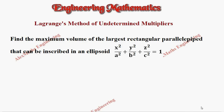Hi students, this is Alex here. In this video we are going to find the maximum volume of the largest rectangular parallelepiped that can be inscribed in an ellipsoid whose equation is x²/a² + y²/b² + z²/c² = 1, by using the Lagrange's method of undetermined multipliers.